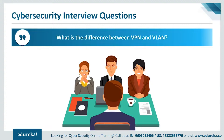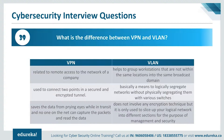Question 39: what is the difference between VPN and VLAN? VPN is related to remote access to the network of a company, while VLAN means to logically segregate networks without physically segregating them with various switches. VPN saves data from prying eyes while in transit — no one on the network can capture the packets and read the data. VLAN does not involve any encryption technique; it is only used to slice up your logical network into different sections for the purpose of management and security.